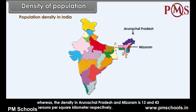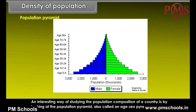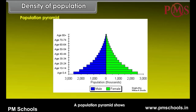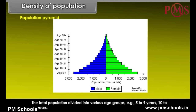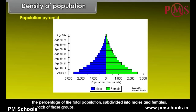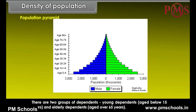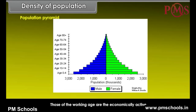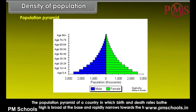Population Pyramid, also called an age-sex pyramid, shows the total population divided into various age groups (e.g., 5 to 9 years, 10 to 14 years) and the percentage of the total population subdivided into males and females in each group. The population pyramid also tells us how many dependents there are: young dependents (aged below 15 years) and elderly dependents (aged over 65 years). Those of working age are the economically active.